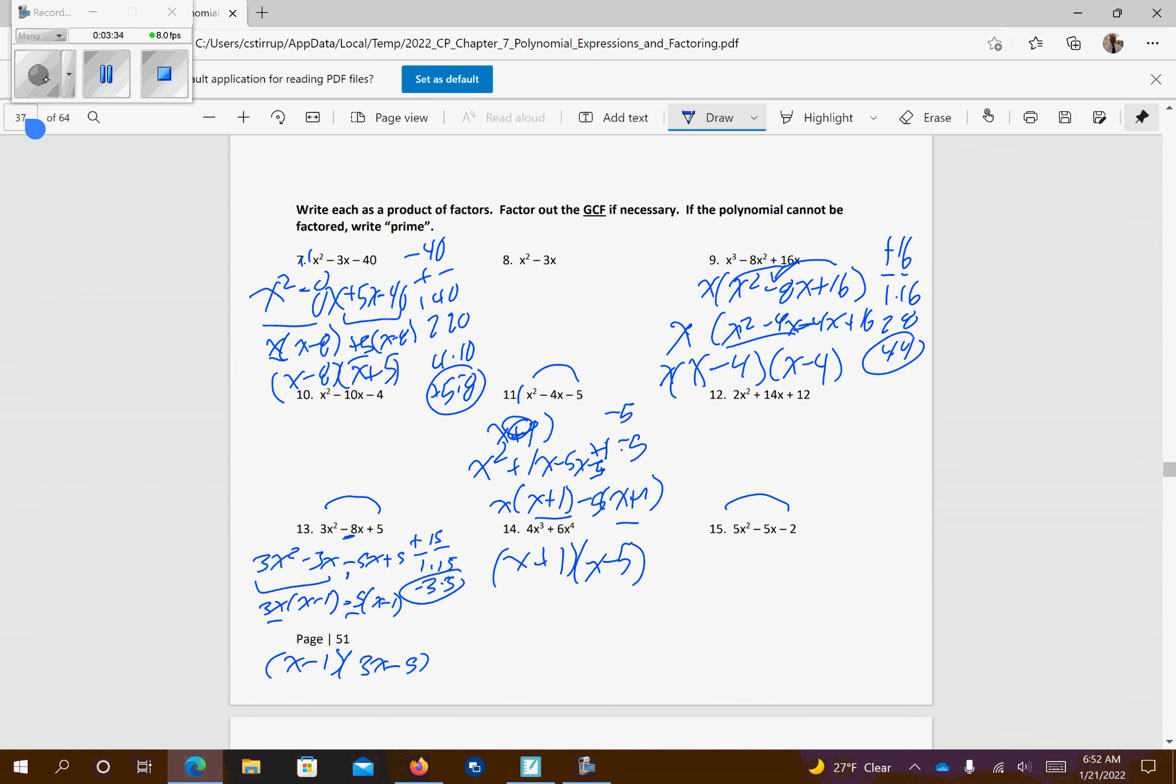Last problem. I'm going to multiply those together so I get negative 10. I know I have alternating signs. 1 positive, 1 negative. So 1 times 10 and 2 times 5. Will any of those, 1 being positive, 1 being negative, add up to negative 5? The answer is no. So this one is prime.